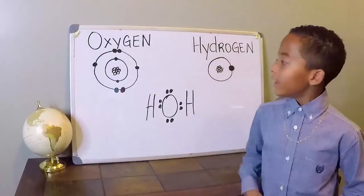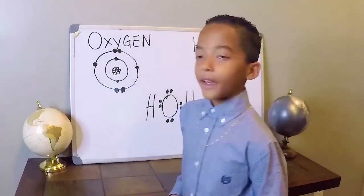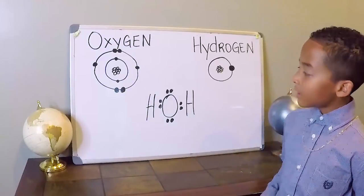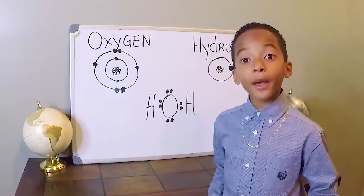Let's make a bond. Let's look at that oxygen atom. It has six valence electrons but it needs two more to make a bond.